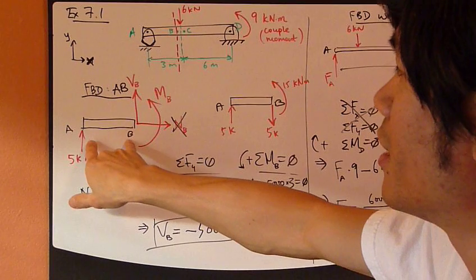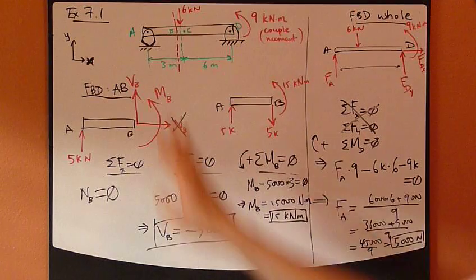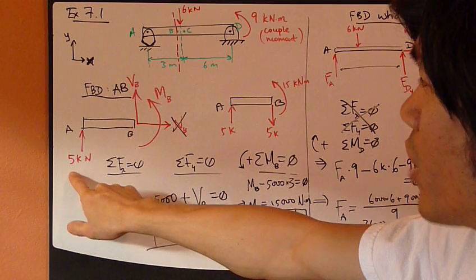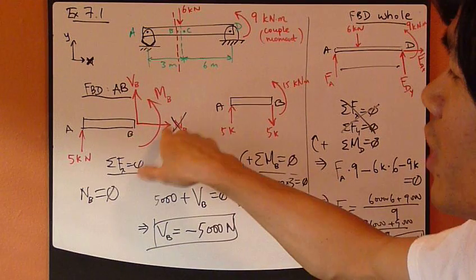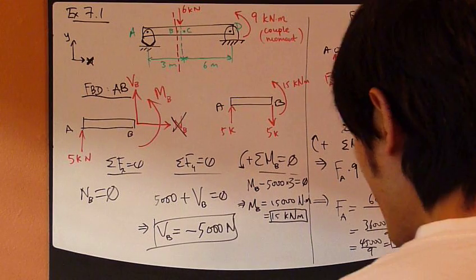So the fact that this 9,000 newton meter of couple moment have resulted in a reaction force of 5,000 newtons at A, that's why this couple moment doesn't appear here at all. Otherwise you would have double counted the effects of this couple moment. So it doesn't appear here at all.